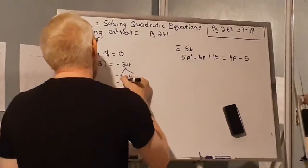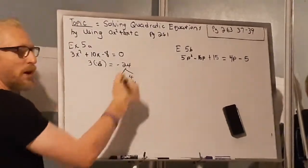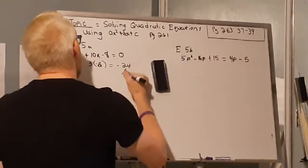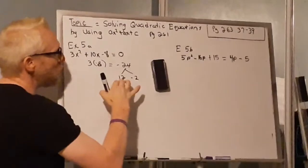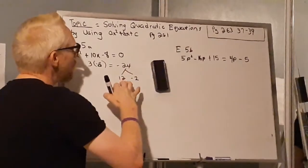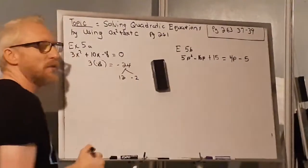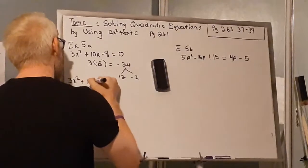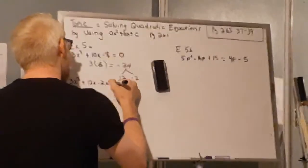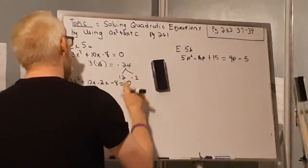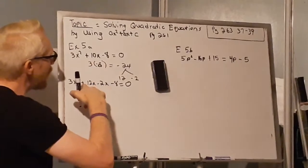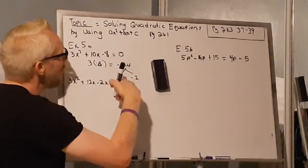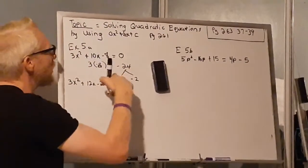I can try -6 and -4, but -6 times -4 equals positive 24, so that's not it either. The other factors I can use are 12 times -2, because 12 times -2 is -24 and 12 + (-2) is actually positive 10. So the factors of -24 that add up to 10 are 12 and -2.